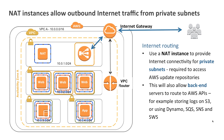When you have an instance in a private subnet that needs to talk to the internet — for example, we have an application server running Microsoft Windows and we want to patch it, so it needs to go to the update repository to retrieve its patches — a network address translation (NAT) instance will help you achieve that.